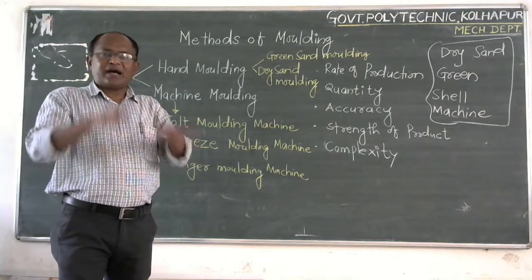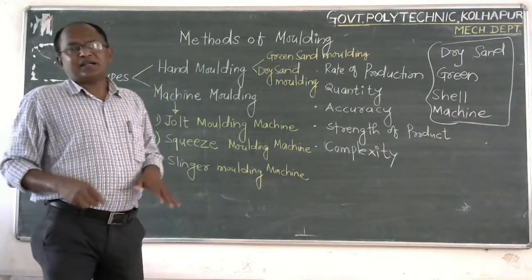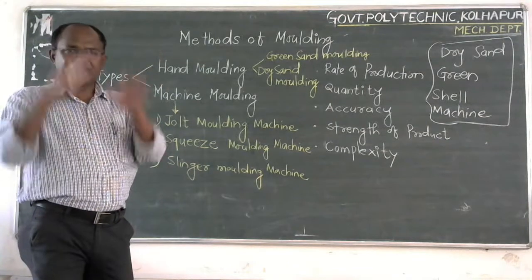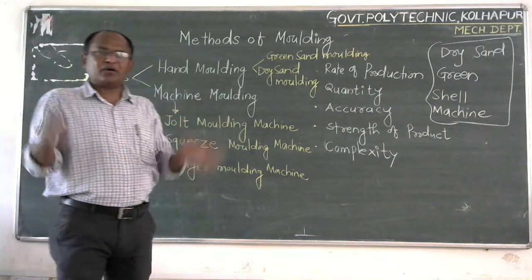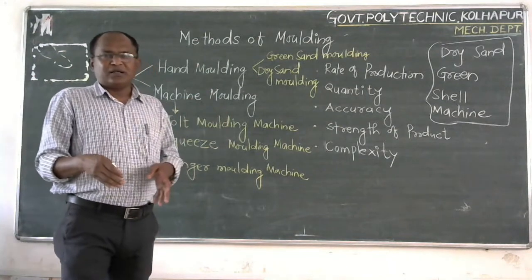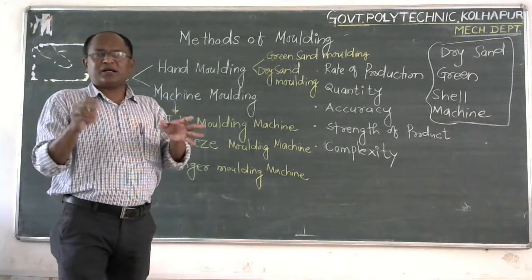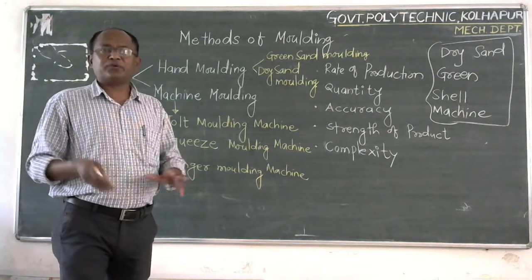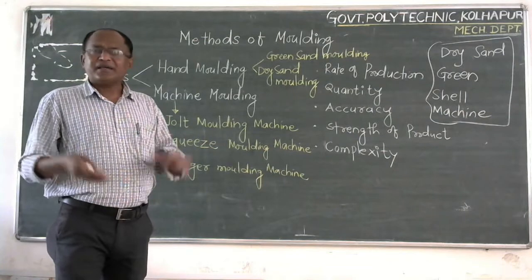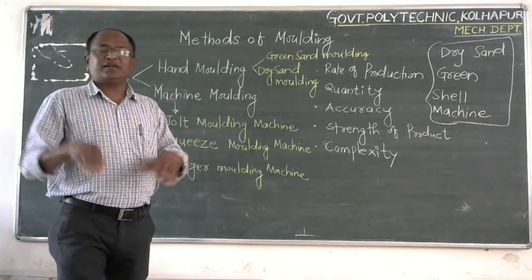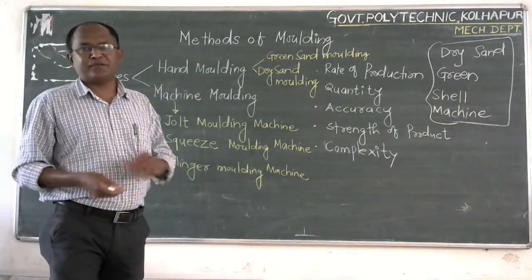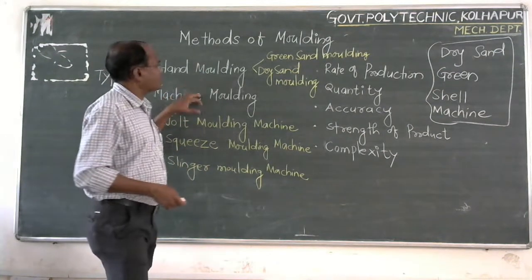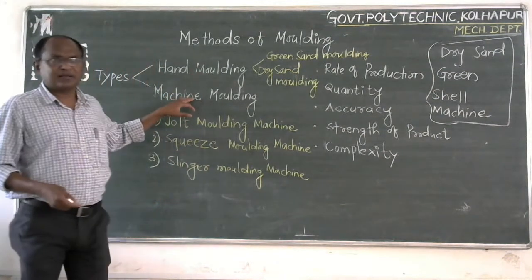If you are using a hand molding process — if all the molding operations are carried out by hand — then that is called hand molding. If the molding process or operations are carried out by using a machine, then that is called machine molding.